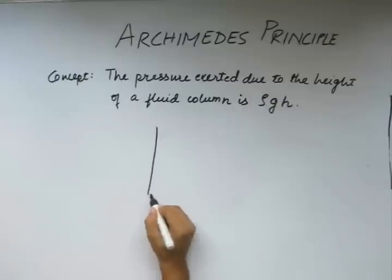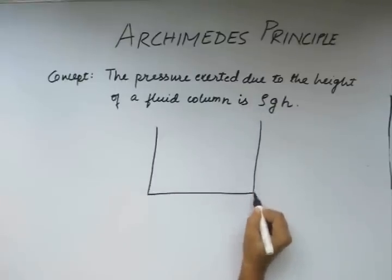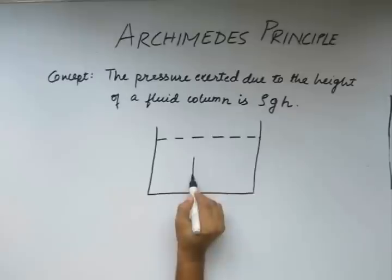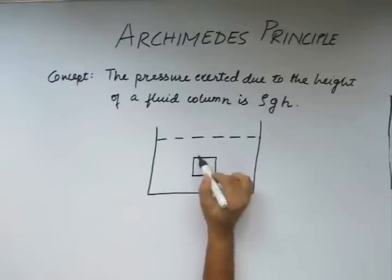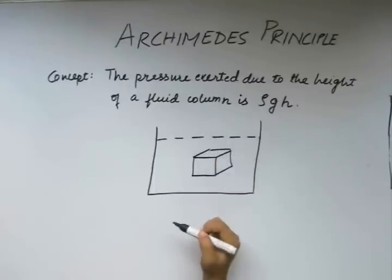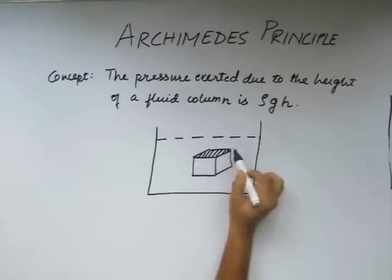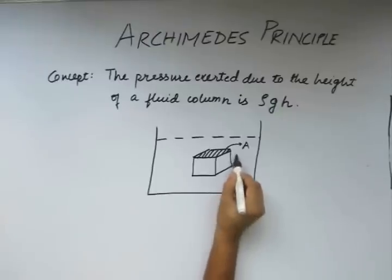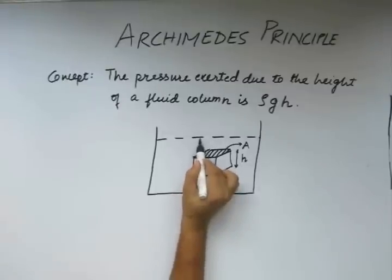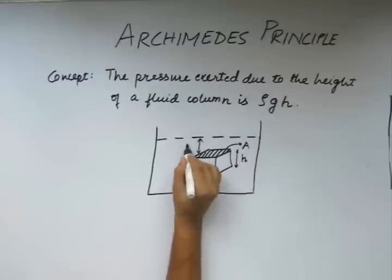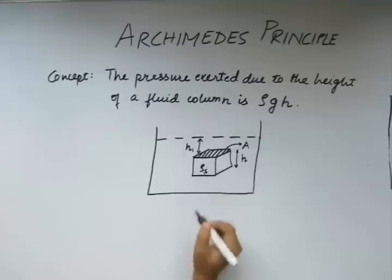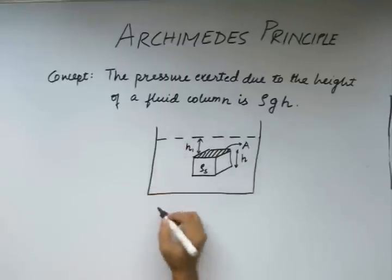Let's say we have a container filled by some liquid. We have a block of solid submerged in this liquid. This block has a cross sectional area of A, the height of this block is h. This block is immersed in this fluid to a depth of say h1. The density of this block is say rho s and the density of this liquid is rho l.